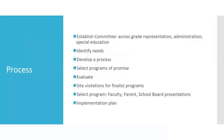In order to ensure fidelity in our process, we followed a set plan. First, we created a committee with grade level representation throughout, as well as special education and administrative representation. We identified our specific needs and created a process to follow. After this, we chose various programs of promise and evaluated them to narrow them down. Once narrowed down, we visited schools using these programs to further determine their effectiveness. We then chose a program to present to the school board, faculty, and parents. Following this, we will purchase the program and create an implementation plan.